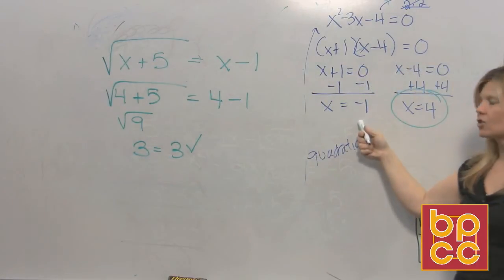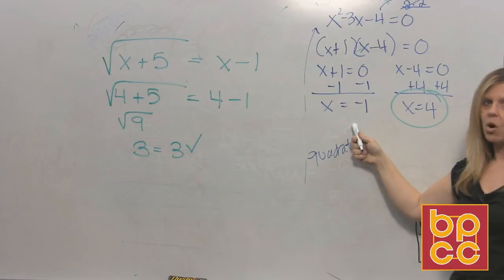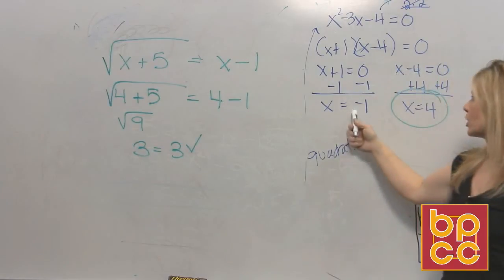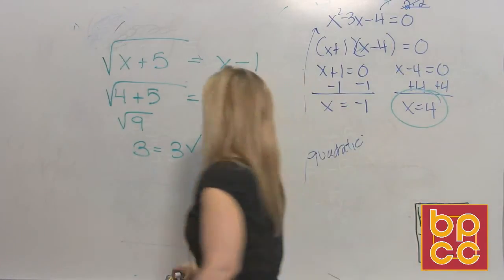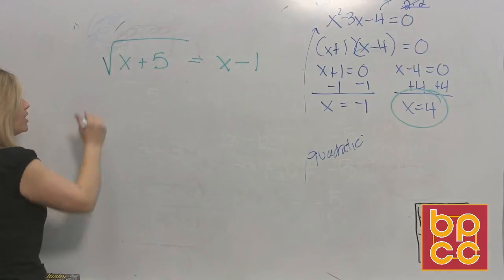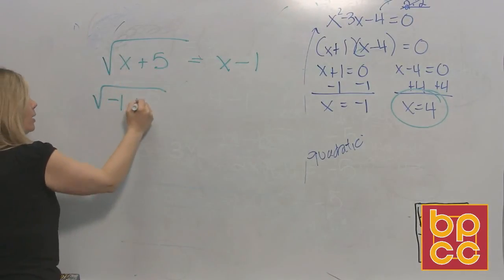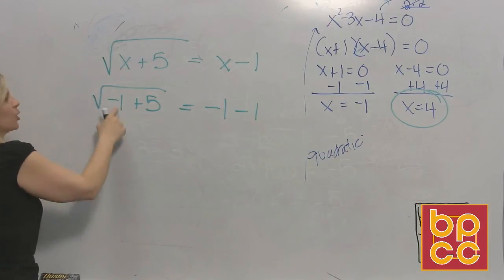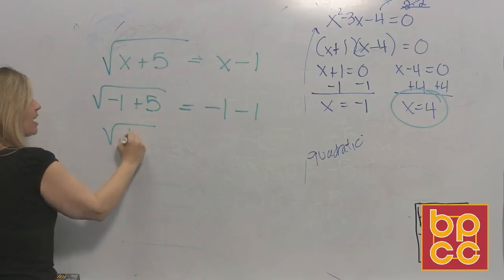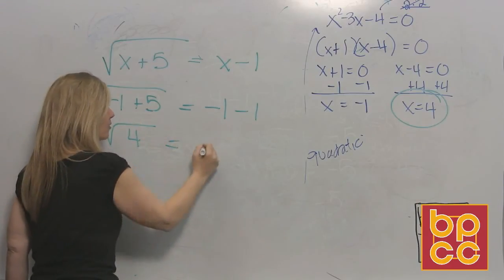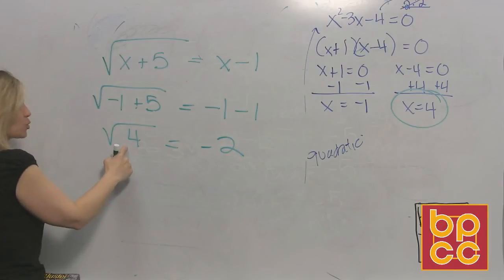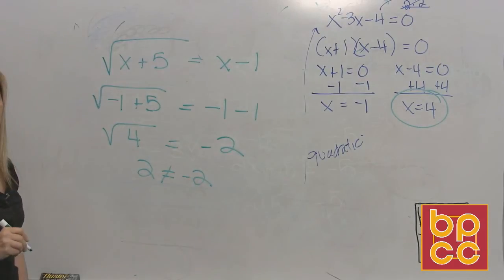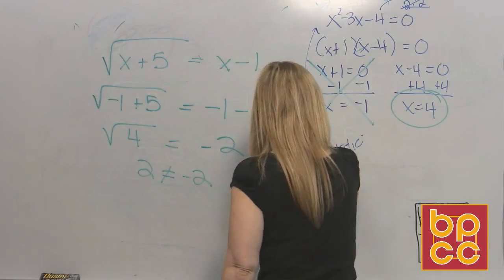Now wait, you have another answer. Don't automatically discard this. This may also work. Sometimes in real life, there can be two solutions. So we're going to check this. Again, we're going to use the original. There's the original equation. Where the x is, I'm going to put the negative one. Where the x is, I'm going to put the negative one. I'm going to work inside first. Negative one plus five is four. Negative one minus negative one is negative two. What's the square root of four? Oh, wait a minute. That's two. Two doesn't equal negative two. It doesn't check. So this answer goes in the garbage.